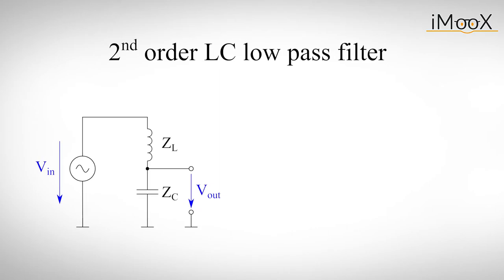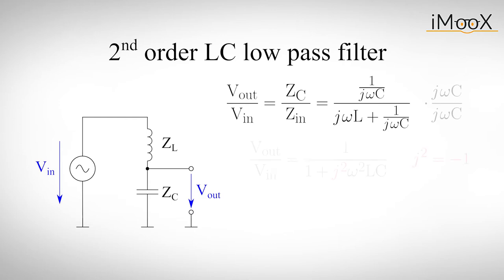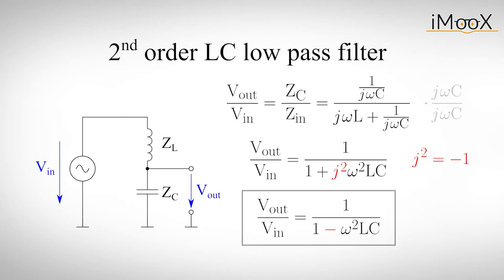We can now combine the effects of inductor and capacitor to build higher order low pass filters. If we want to describe the behavior of this second order low pass filter mathematically, we can do this by dividing the output voltage by the input voltage, which is equal to dividing the output impedance by the input impedance. If we multiply this term on the right side by j omega C, we get this expression. Since j is the square root of minus one, j squared will simply give us minus one. Finally, we are left with this equation, which is very interesting for two reasons.